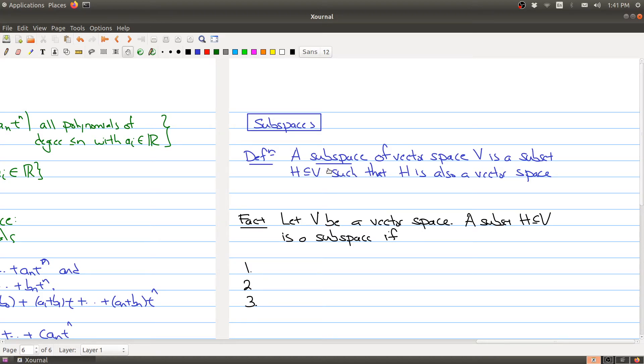So a subspace of a vector space, or let me underline it in red here because it's kind of important. A subspace of a vector space V is a subset of your space such that H also has the property of being a vector space.